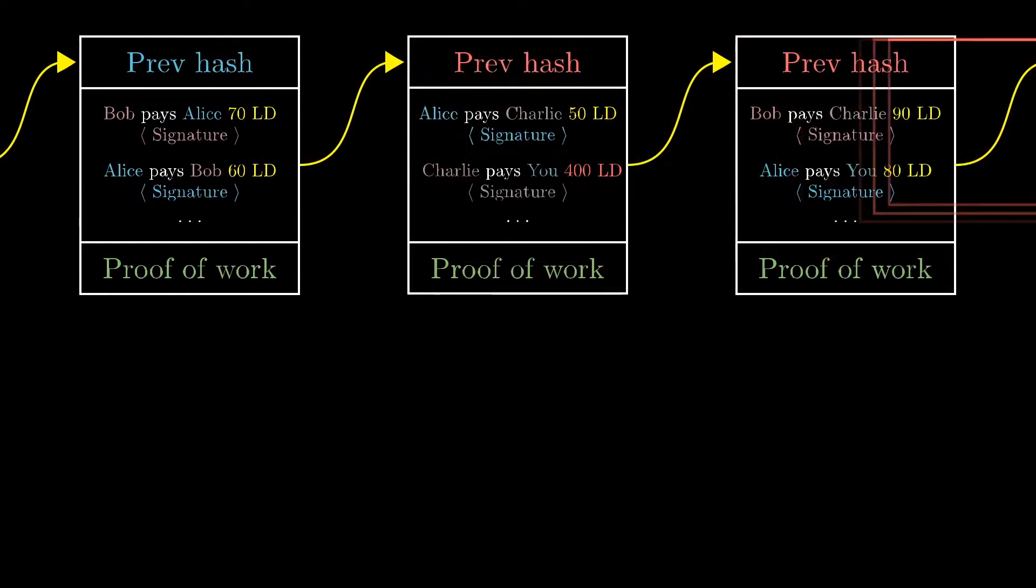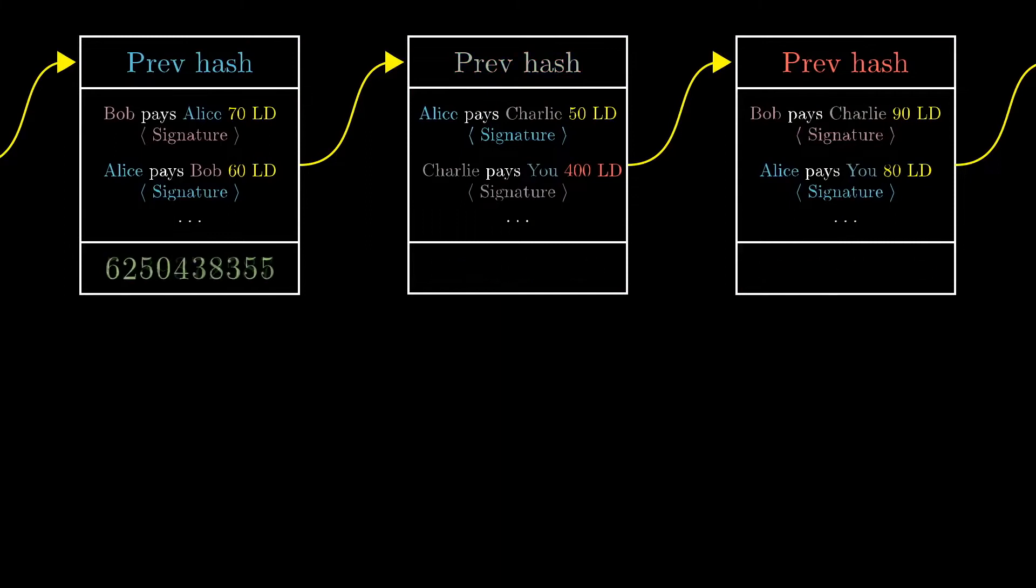That would require redoing all of the work—finding a new special number for each of these blocks that makes their hashes start with 60 zeros. Because blocks are chained together like this, instead of calling it a ledger, it's common to call it a blockchain.